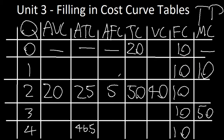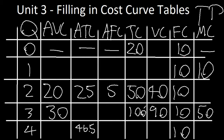Your marginal cost is actually 50, so your total cost is 100. And your variable cost — total cost minus fixed cost — is 90. So 90 divided by the quantity, which is 3, is 30. 100 divided by 3 for average total cost is 33.3. And fixed cost divided by 3 is 3.33.